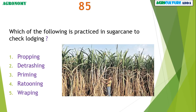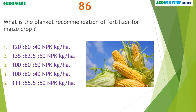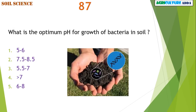The following practice is used in sugarcane to check lodging: wrapping. What is the blanket recommendation of fertilizer for maize crop? 135:62.5:50 NPK kg per hectare. What is the optimum pH for growth of bacteria in soil? 6 to 8.